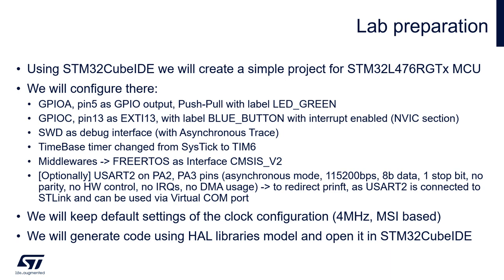Within our simple project we need to configure one pin as a user interface output. It will be pin 5 on port A. There is a green LED connected there. We will configure it as output push-pull and put the label LED_green on it. Then we need one pin as user interface input — pin 13 on port C. There is a blue button connected to it. We will configure this pin as EXTI13 and label it blue_button.